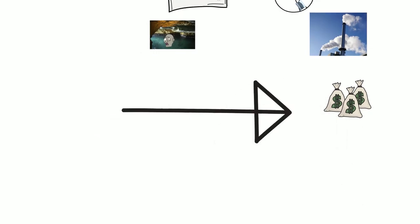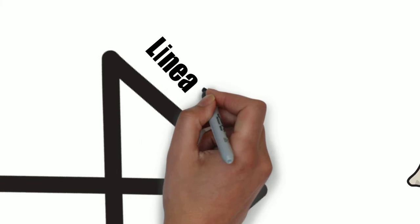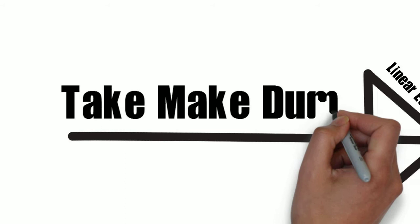Both of these methods follow what is called a linear economy. This is because it requires that all goods follow the steps of take, make, dump.